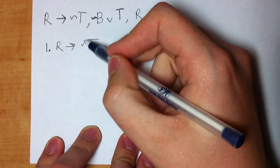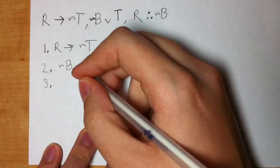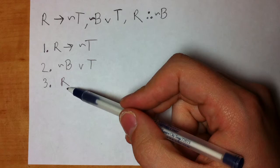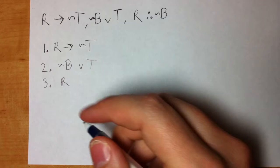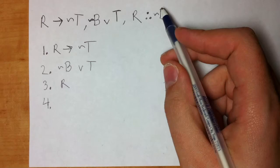On line two, we put tilde B wedge T, because it's our second premise. Line three, put R, because it's our third premise. Usually people ask, do I have to put the third premise third? Can I put it first? The answer is yes. You could write these in whatever order you want. I just go from left to right. So now, the goal is to get tilde B.